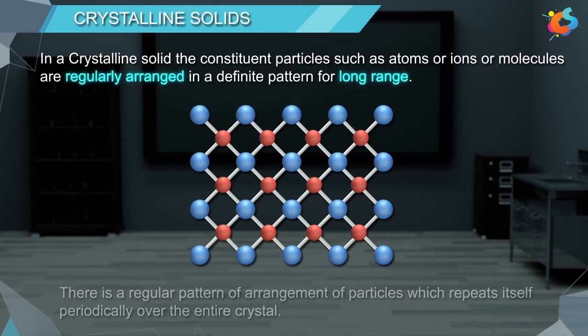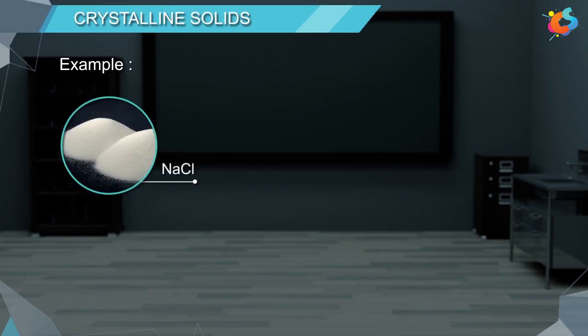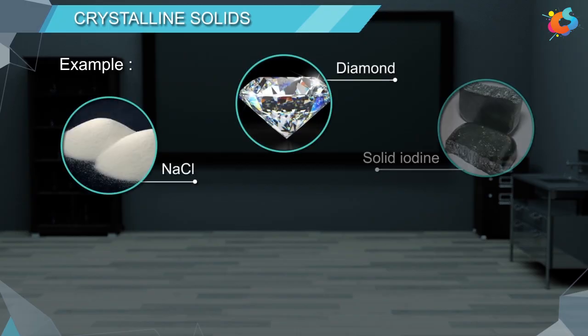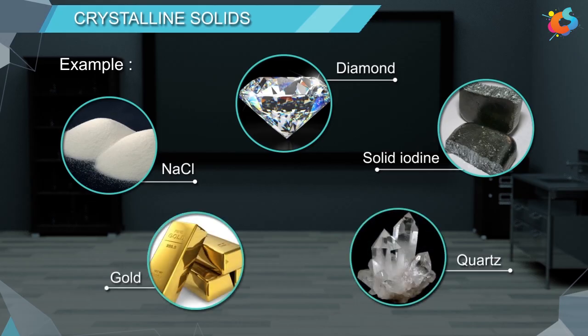In other words, there is a regular pattern of arrangement of particles which repeats itself periodically over the entire crystal. Examples of crystalline solids are sodium chloride, diamond, solid iodine, gold, quartz, etc.